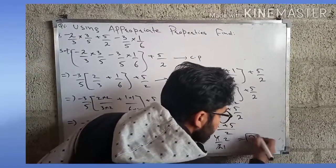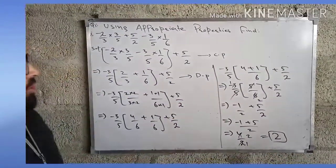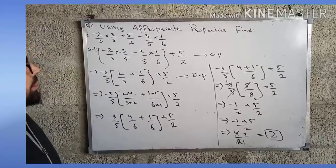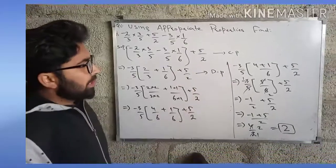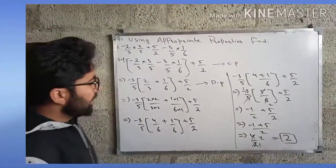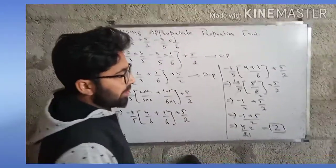So 2 is our answer. Here is the solution of this question. It's very easy. In the first step I have used commutative property, and in the second step I have used distributive property, and at the end we get the solution that is 2.